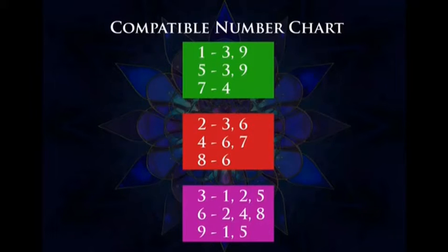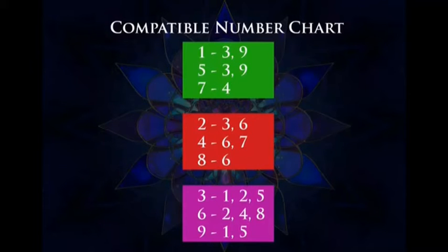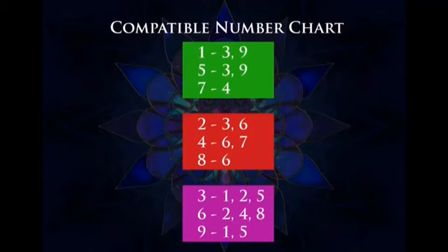Compatible numbers, as the name suggests, are numbers that are compatible with each other. So 1 is compatible with 3 and 9; 5 is compatible with 3 and 9; 7 is compatible with 4; 2 is compatible with 3 and 6; and so on.